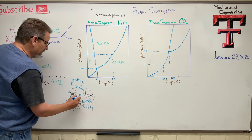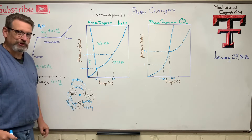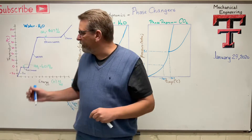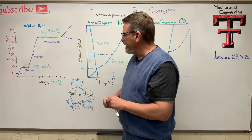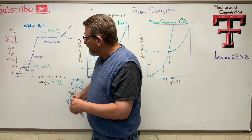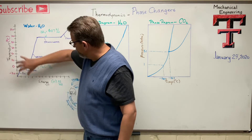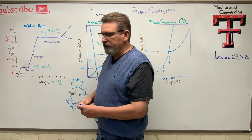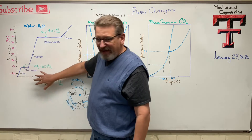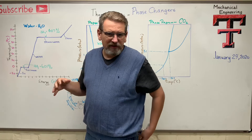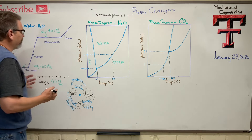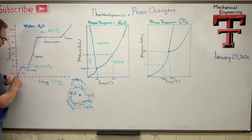So there you go — the wheel of phase change. Let's talk about the phase change of water. I've got a graph drawn here with two axes: temperature on one axis and energy on the other. As we add temperature to a system, we're adding internal energy and enthalpy to that system.